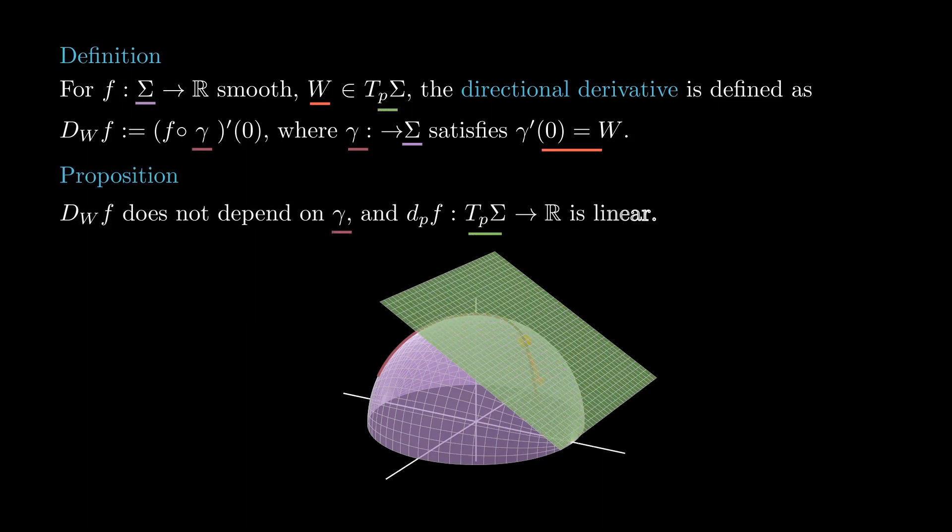We will see that this definition does not depend on the curve gamma, and moreover, when we restrict this function to a single tangent plane, it is a linear function from the vector space Dp sigma to rk, which we denote by Dpf.